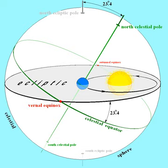The ecliptic forms the center of the zodiac, a celestial belt about 20 degrees wide in latitude through which the Sun, Moon, and planets always appear to move.